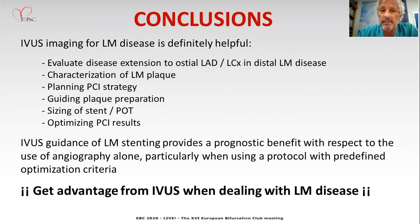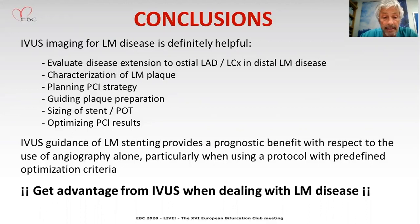My conclusions are that IVUS imaging for left main disease is definitely helpful to evaluate the disease extension to ostium, LAD, and circumflex; to characterize the plaque; to assess calcification; to plan the PCI strategy; to guide plaque preparation; to size the stents, balloons, and POT; and to optimize the results of the procedure. IVUS guidance of left main stenting is associated with important prognostic benefits compared to angiography alone, particularly when following protocols and optimization criteria. My advice is: get advantage from IVUS when dealing with left main disease.